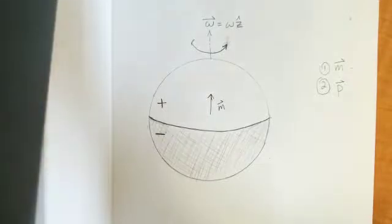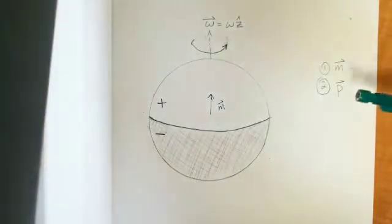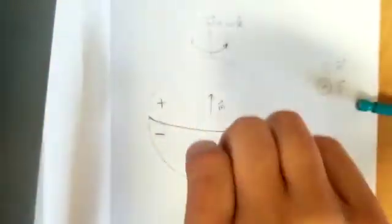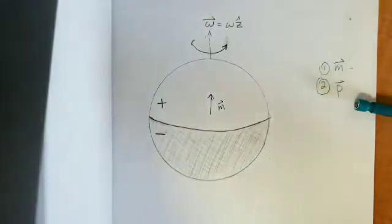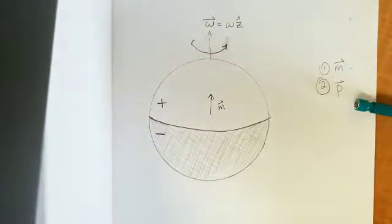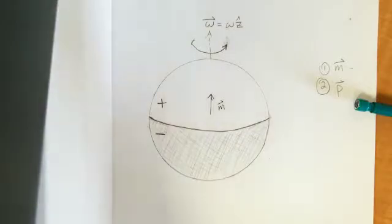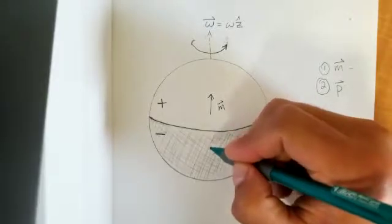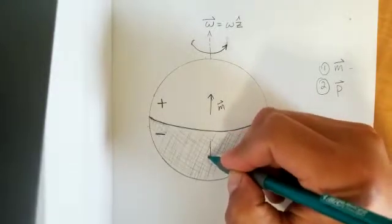For the negative side, we do the same process, except instead of using our right hand rule, we use our left hand. Using our left thumb as we go around, we see that our fingers curl around in the negative z direction. Adding those up, our net magnetic moment on the bottom half of the sphere is in the negative z direction.